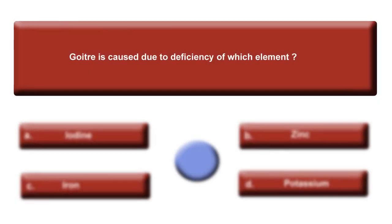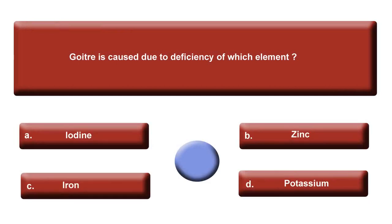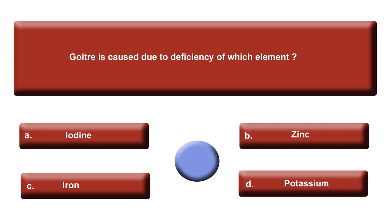Now the next question: Goitre is caused due to the deficiency of which element? Option A: Iodine. Option B: Zinc. Option C: Iron. Option D: Potassium. Your time is up. The answer is A, Iodine.